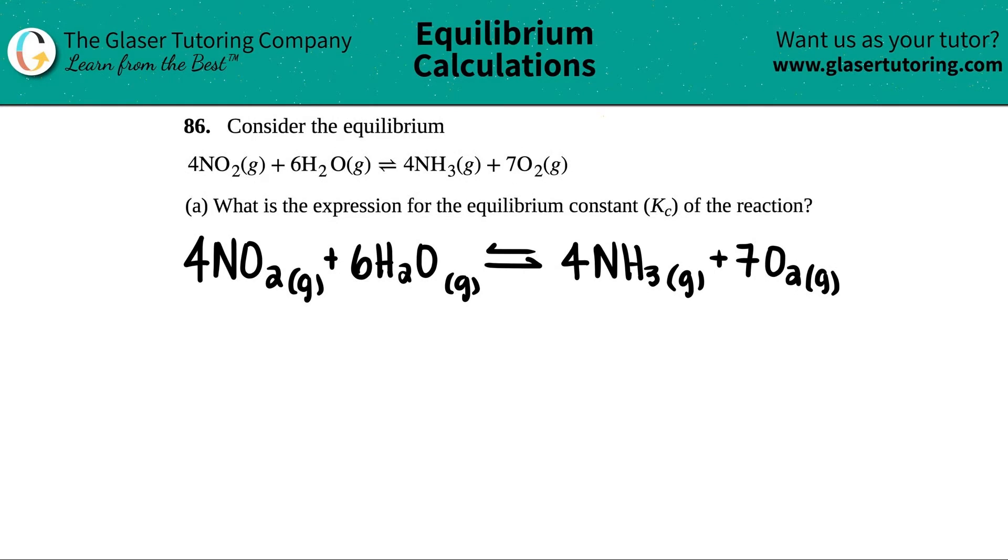Number 86, consider the equilibrium. They give us this balanced equation: 4NO₂ gas plus 6H₂O gas comes to equilibrium with 4NH₃ gas plus 7O₂ gas. For letter A, it says what is the expression for the equilibrium constant Kc of the reaction? So I just wrote it out a little bit bigger for you guys.